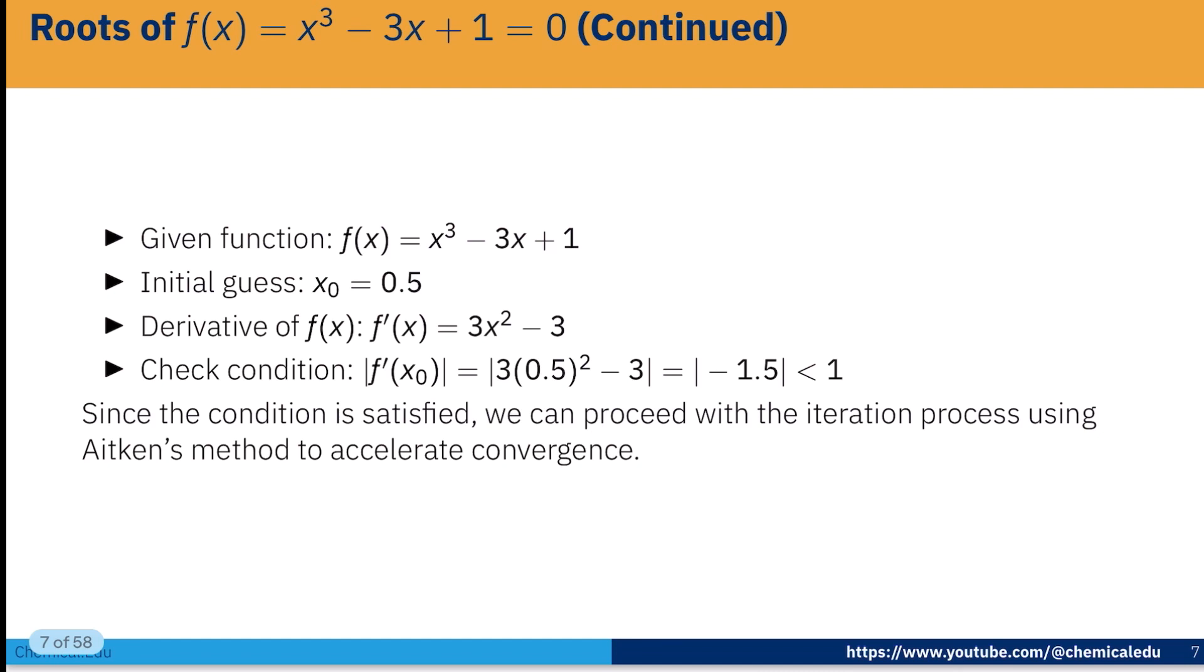Now, here is the example. How does Aitken's method work? Here f(x) = x³ - 3x + 1 = 0. Initial guess I am taking x_0 = 0.5 and derivative of f(x), that is f'(x) = 3x² - 3. Now check the condition that |f'(x_0)| = |3(0.5)² - 3| = |-1.5|, which is less than 1. Since the condition is satisfied, we can proceed with the iteration process using Aitken's method to accelerate the convergence.